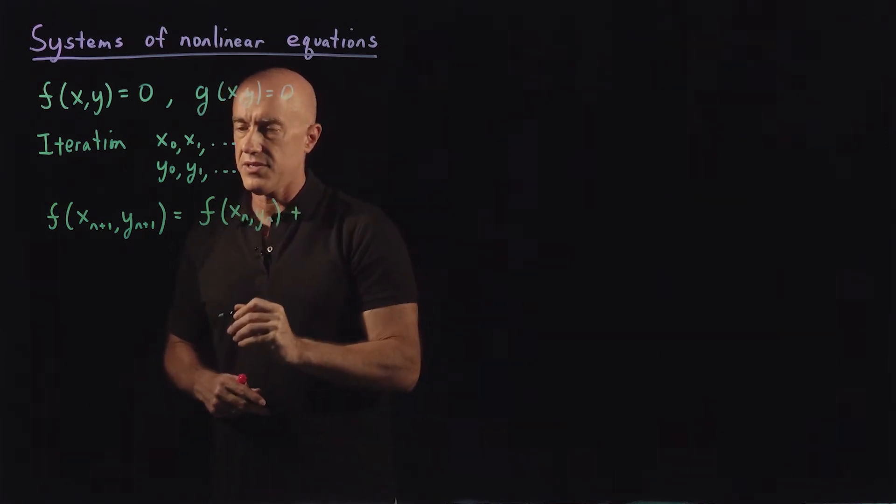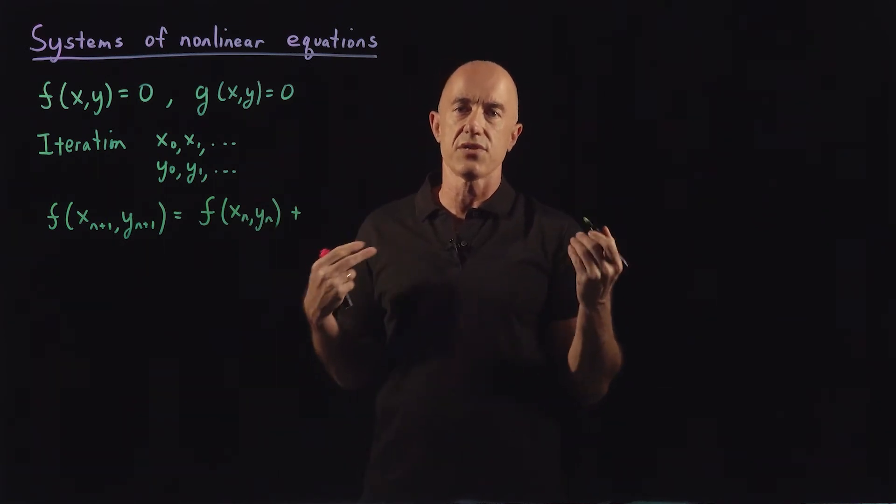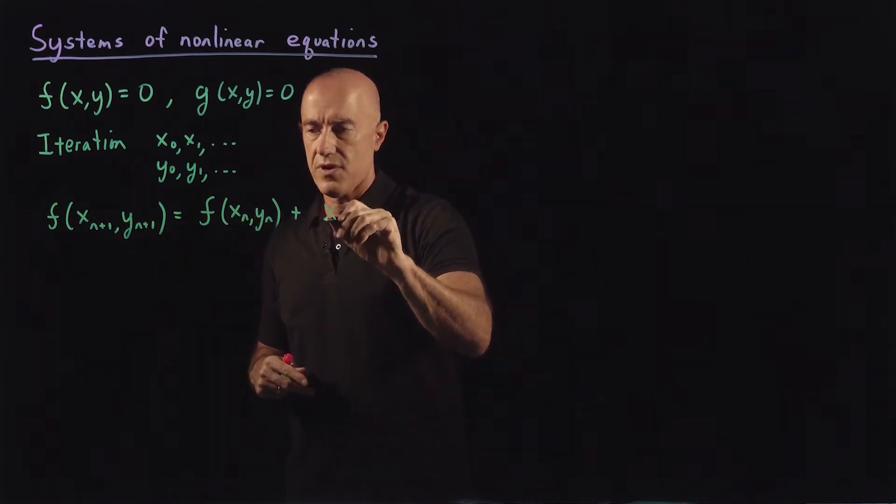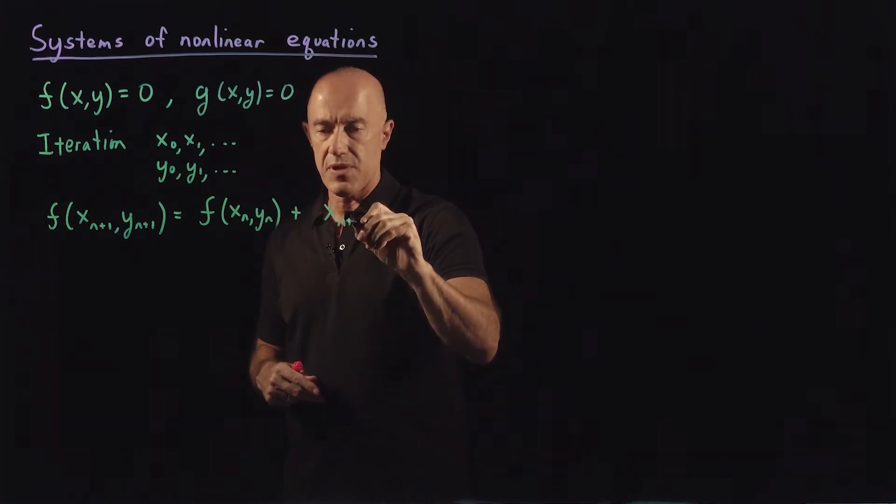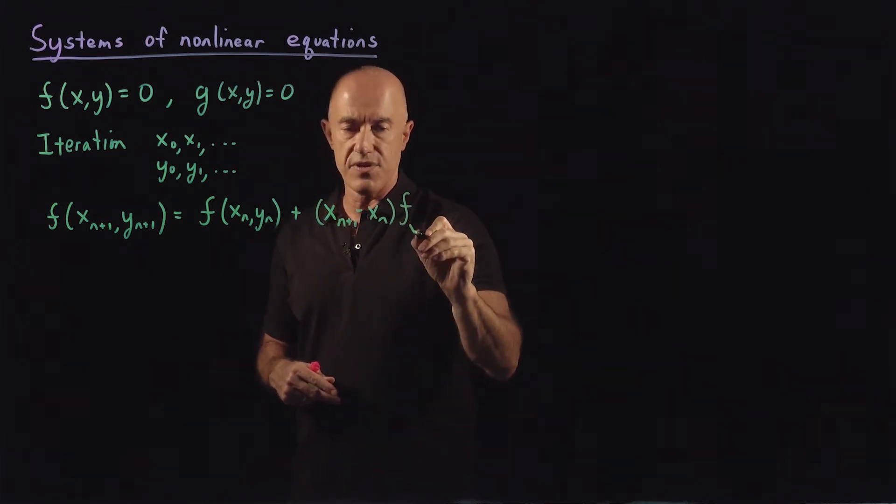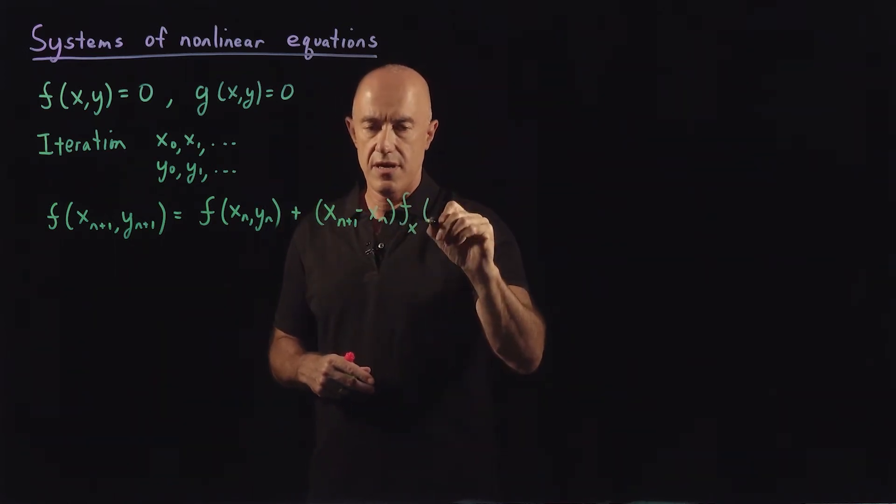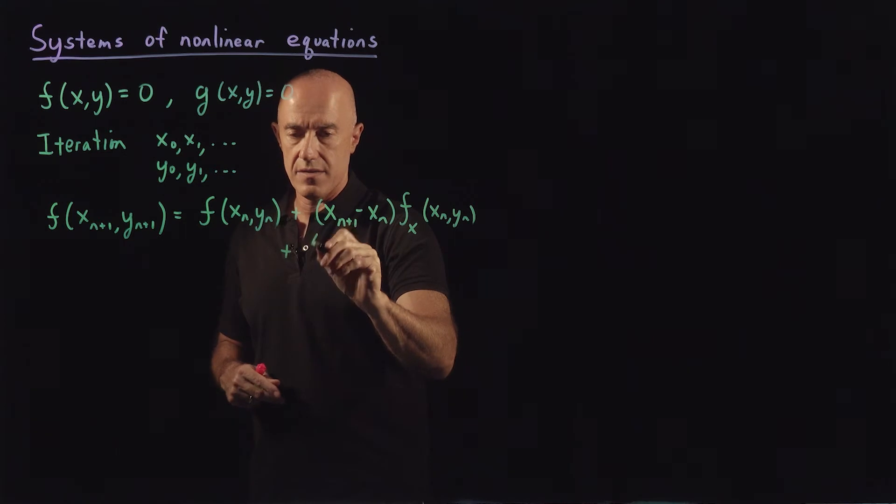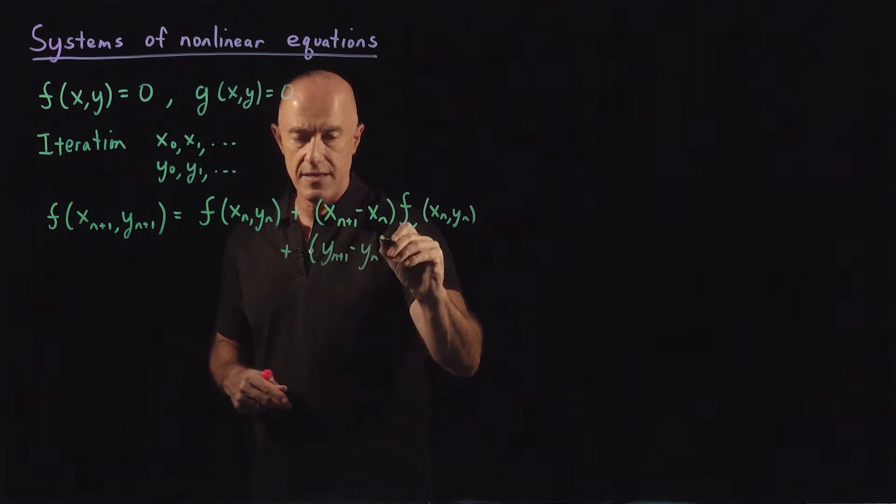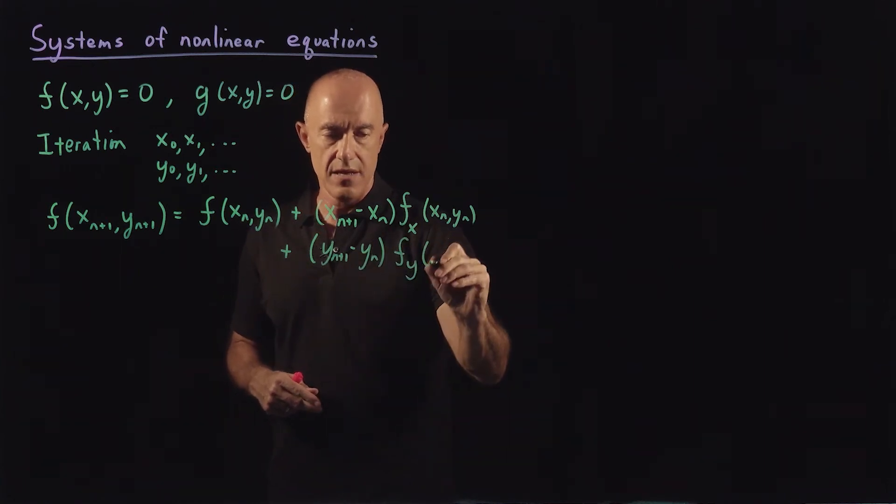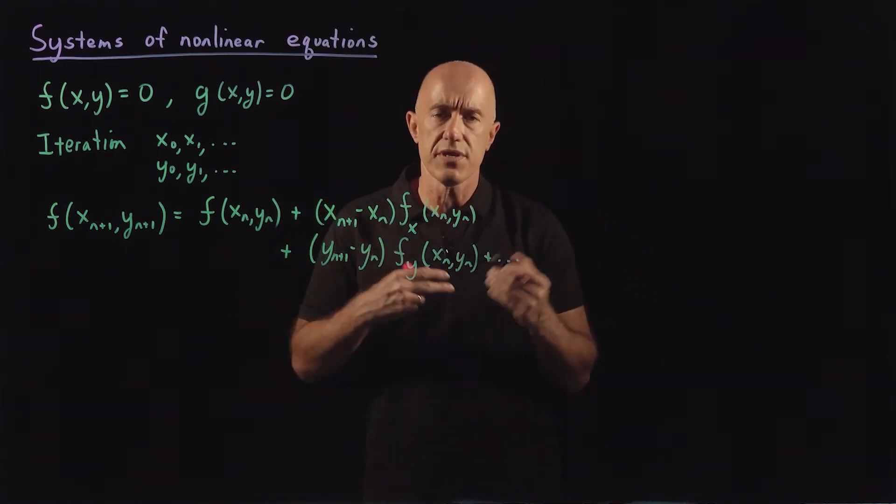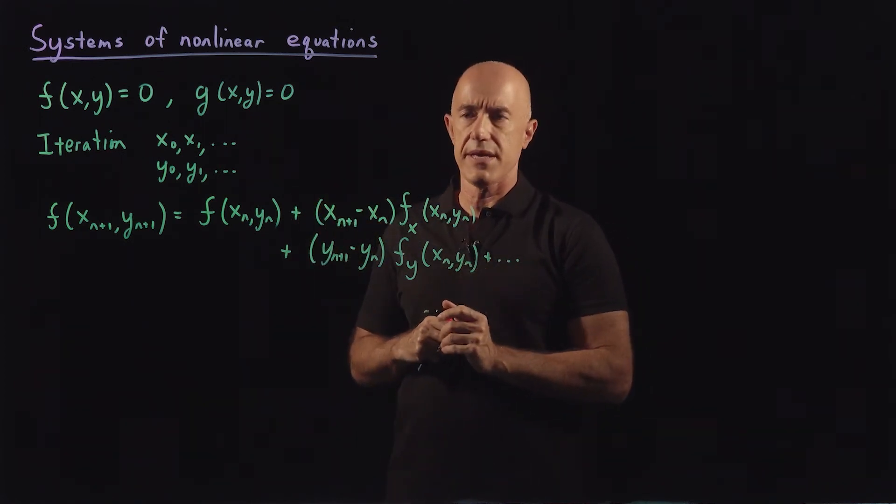The next term in the Taylor series, using the partial derivative, so this is a Taylor series of a function of two variables. The next term will be x n plus 1 minus x n times the partial derivative of f with respect to x, evaluated at x n, y n, plus y n plus 1 minus y n times the partial derivative of f with respect to y evaluated at x n, y n. And then there are higher order terms, but Newton's method we only consider the linear approximation to the function.